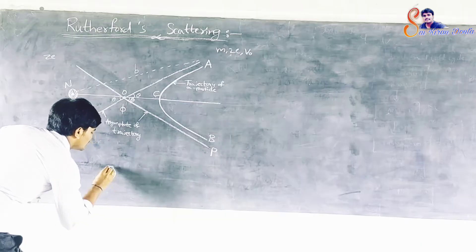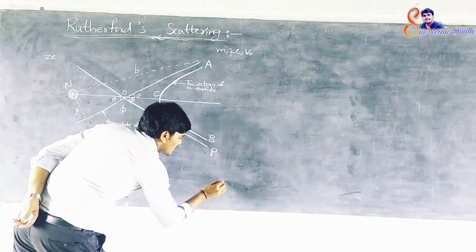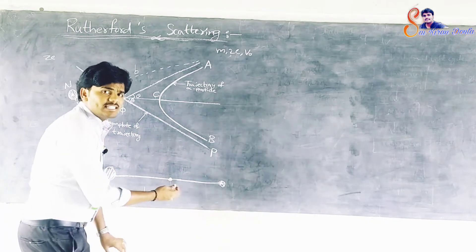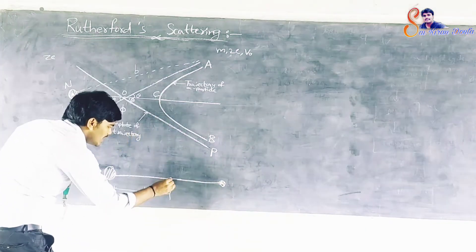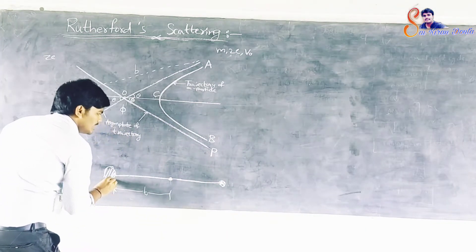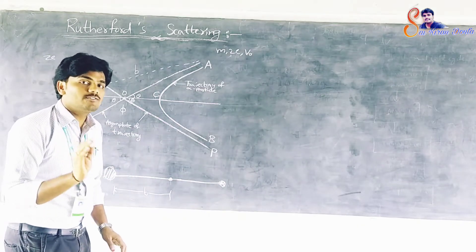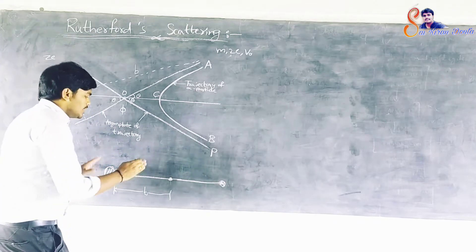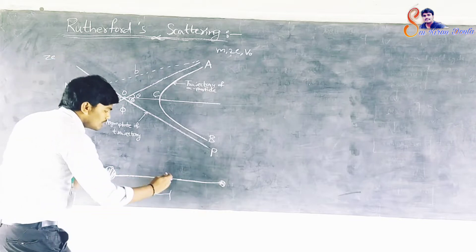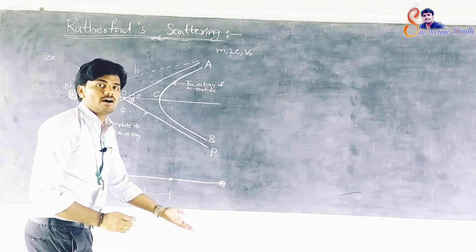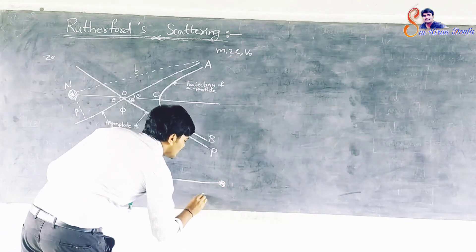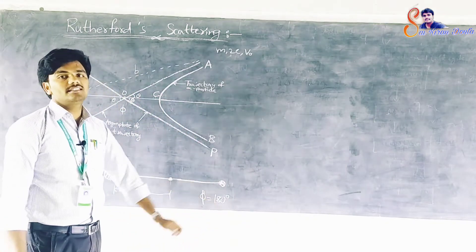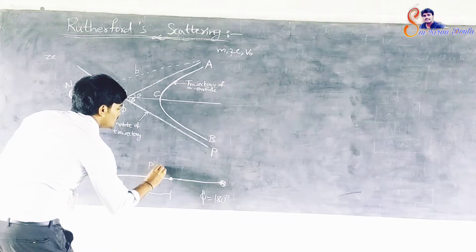Suppose this is the nucleus. An alpha particle is directed straight towards the nucleus. In this case, the alpha particle will be stopped at a particular distance B from the nucleus due to the presence of Coulombic repulsive force. Then it traces its reverse path, so the scattering angle θ is equal to 180 degrees. This is the case when P is equal to 0.